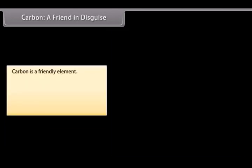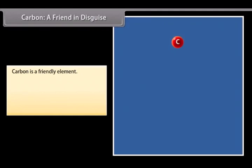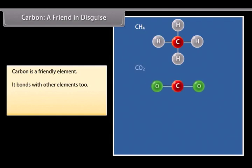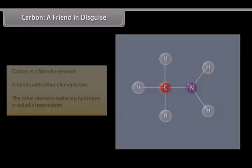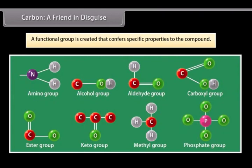Carbon: A friend in disguise. Carbon is a friendly element. It not only bonds with hydrogen but also with other elements such as halogens, oxygen, nitrogen and sulfur. The compounds are formed in the same manner as with hydrogen. However, instead of hydrogen, the other element is used and this element replacing hydrogen is called a heteroatom. A functional group is created that confers specific properties to the compound without considering the length and nature of the carbon chain.